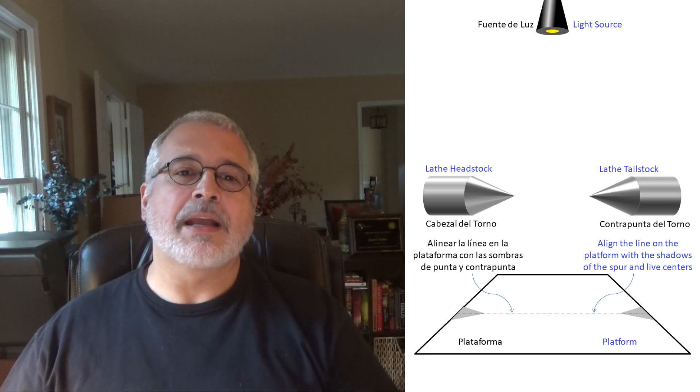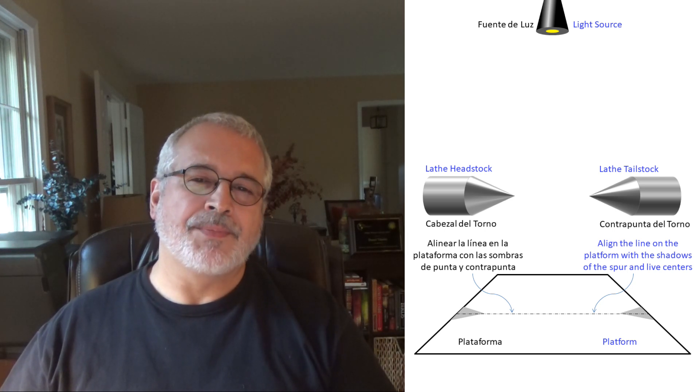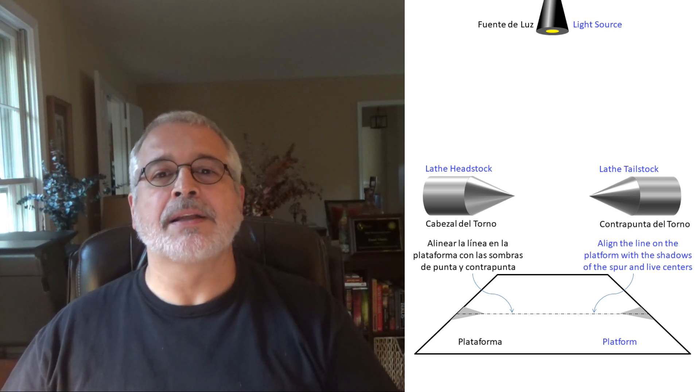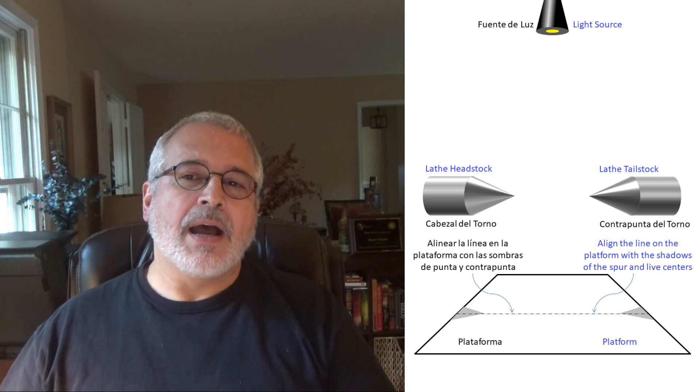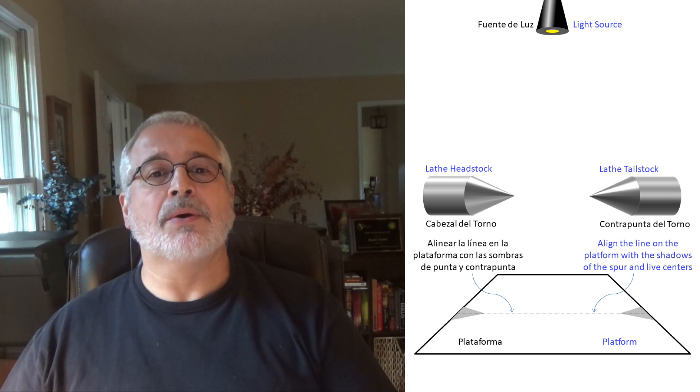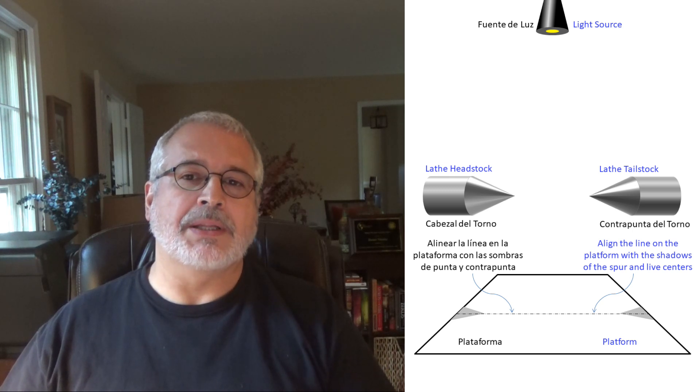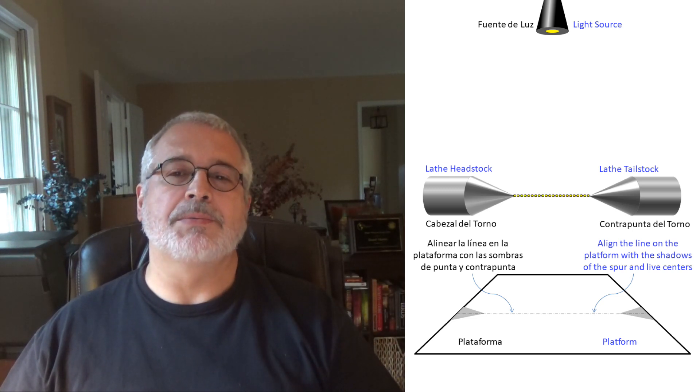Now that I have spoiled the end, let's begin the more technical explanation that you can skip if it comes to boring. In the slide that appears to the right I have drawn the source of light, also a spur center on the headstock and a live center on the tailstock. I have also drawn below the platform, and in another video I will show you how to construct it, over which we will project the shadow of the objects.